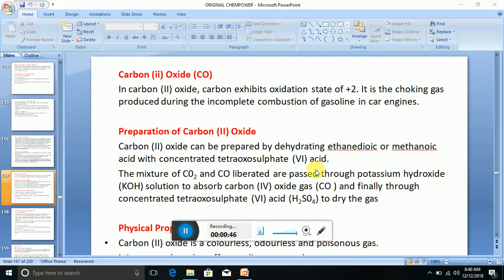Now let's look at the preparation of carbon (II) oxide. Carbon (II) oxide can be prepared by dehydrating ethanedioic or methanoic acid.